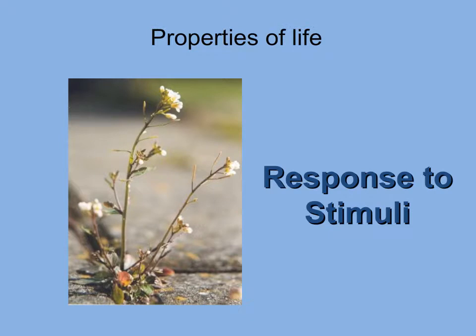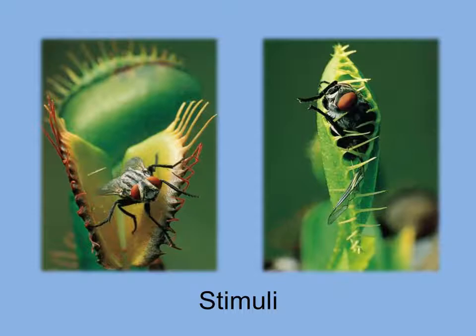All forms of life respond to stimuli — physical or chemical changes in their internal or external environment. This plant is exhibiting a response called phototropism: it needs photons from sunlight to produce sugar, and will grow to face the sun to capture as much sunlight as possible. This Venus flytrap has trigger hairs; when the hairs are touched, the leaves fold together and trap the insect. Secretions containing digestive enzymes kill and digest the prey.